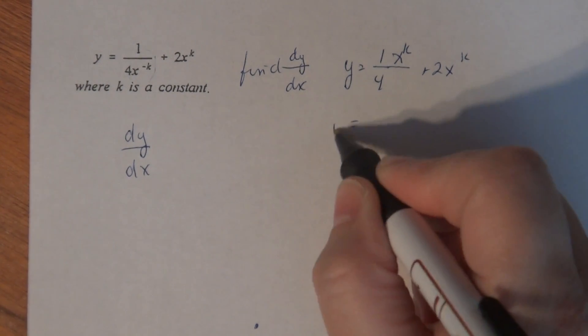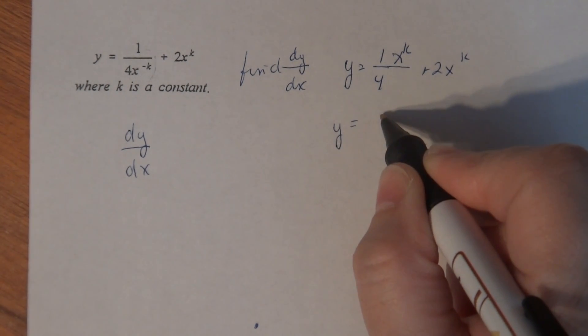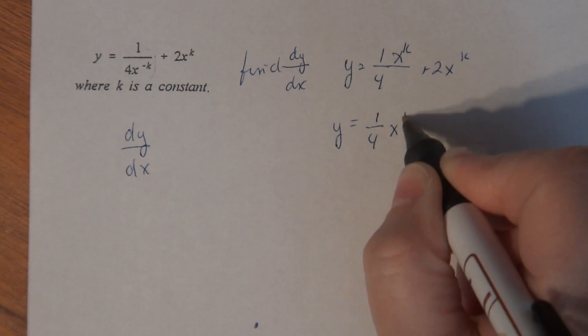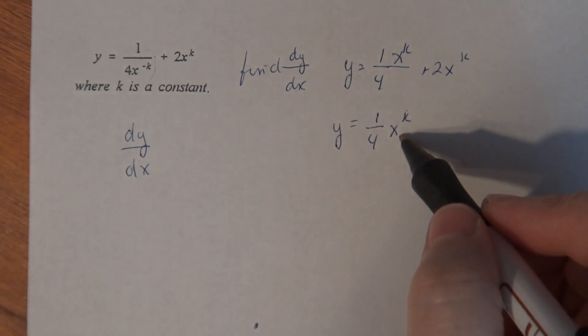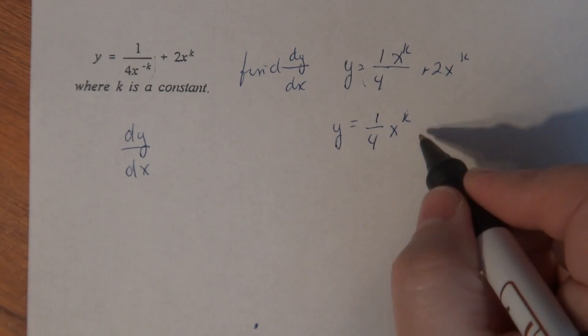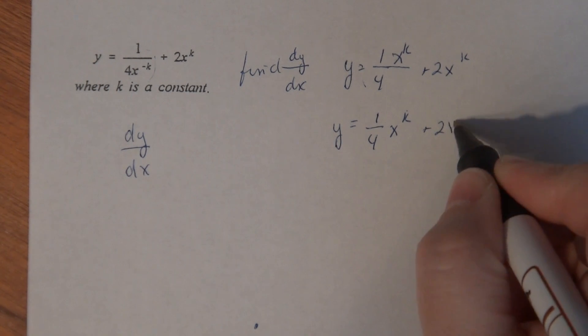I'm going to simplify this a little bit more. I'm going to write this as one quarter x to the k. If you don't believe me, multiply 1 times x to the k, 4 times 1, which is the denominator of this guy, and you get this, plus 2x to the k.